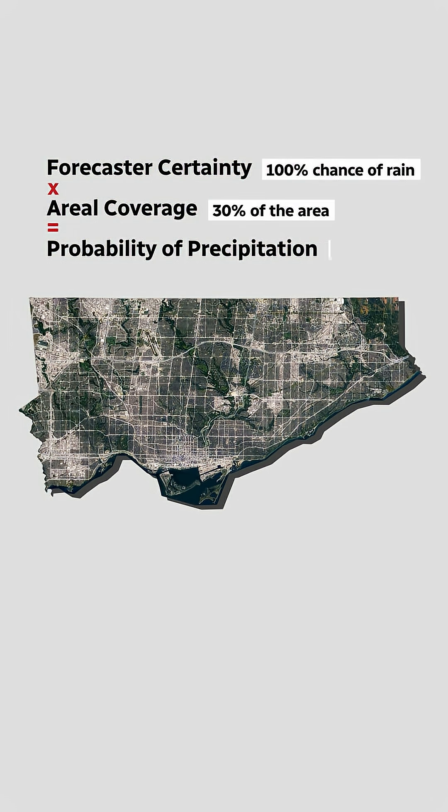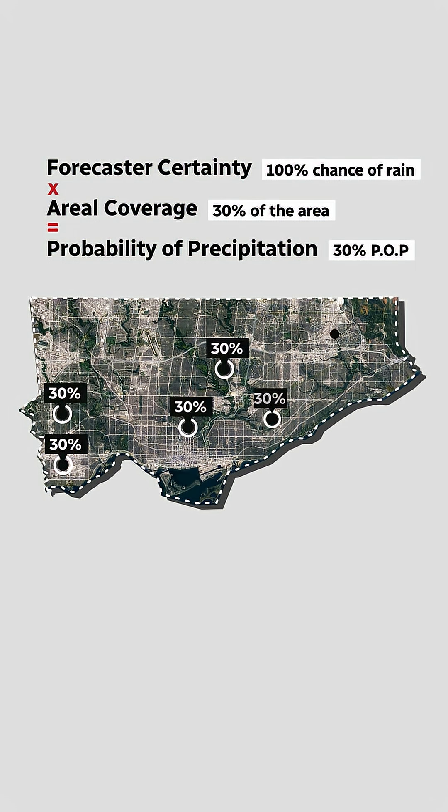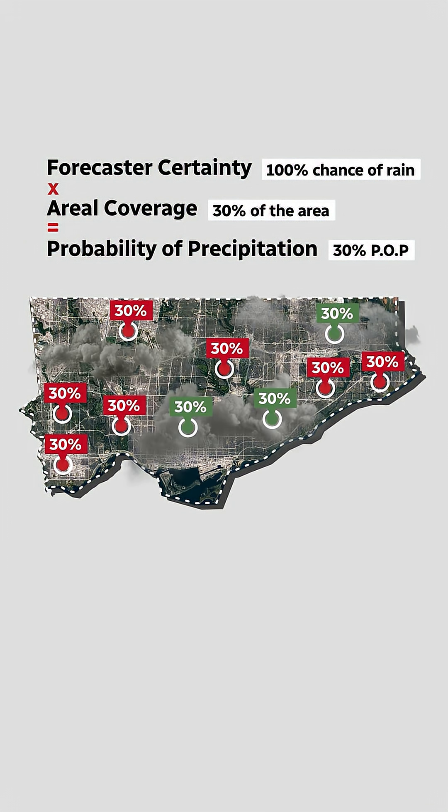You just need to know the timeframe for the forecast and the area it's covering. A 30% chance of rain this afternoon in Toronto means anywhere I am standing outside in Toronto this afternoon, there is a 30% chance I'll get wet. So if your weather app shows a 30% probability of precipitation but a cloud with rain all day —